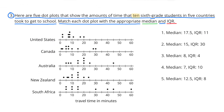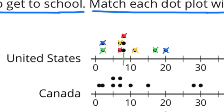Number three: here are five dot plots that show the amounts of time that ten sixth grade students in five countries took to get to school. Match each dot plot with the appropriate median and IQR. First, I'm going to find the median for all the dot plots. I've identified the United States median with a green line — it's at approximately 8.